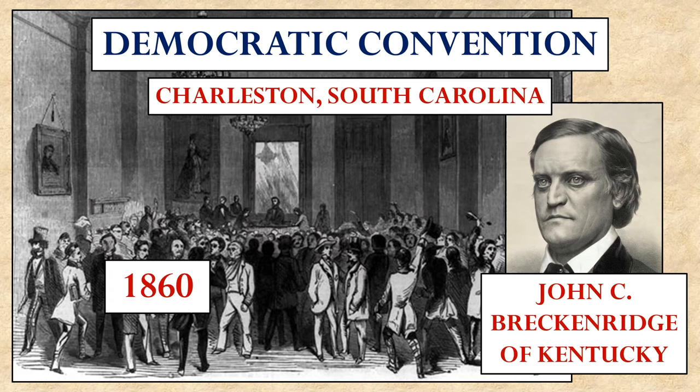With the Republican Party in mind, the Democratic Party held its national convention in Charleston, South Carolina, in the heart of slave country. There, though, they couldn't agree on what position to take. Many members of the Democratic Party from the North didn't want to come out strongly in favor of slavery, so the pro-slavery southern delegates left the convention. They would come back a few days later and nominate their own candidate for president, a man named John C. Breckinridge from Kentucky.